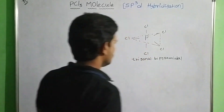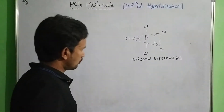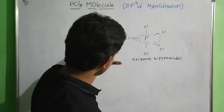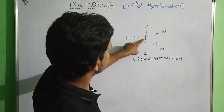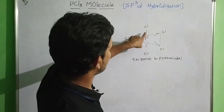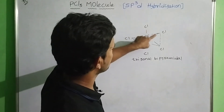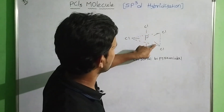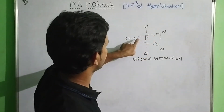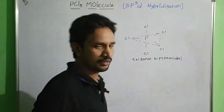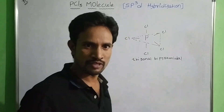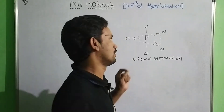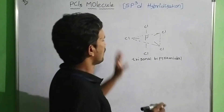In this structure, phosphorus forms 5 sigma bonds: 1, 2, 3, 4, 5. Phosphorus forms 5 sigma bonds.